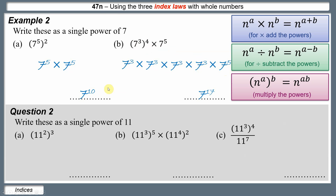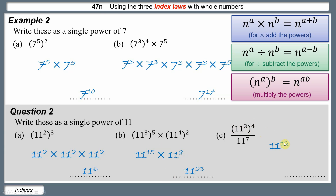Pause the video, have a go at the practice questions, then restart for the answers. 11 squared, then cubed: 11 squared times itself three times, add the powers to get 11 to the 6. For the next one, using the third law gives 11 to the 15 multiplied by 11 to the 8; adding those powers gives 11 to the 23. For the fraction: apply the third law to get 11 to the 12, divided by 11 to the 7; subtract the powers to give 11 to the power of 5.